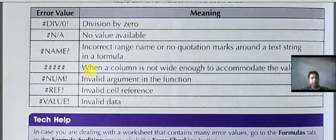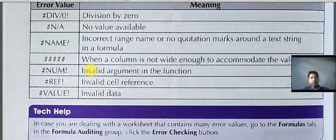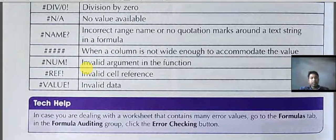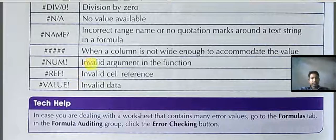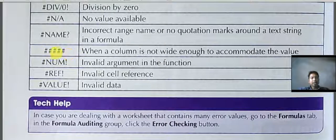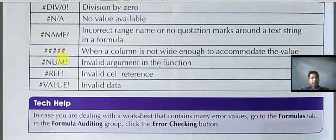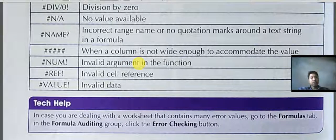Then ##### - when a column is not wide enough to accommodate the value. If the value can't be accommodated in the cell, then this hash symbol appears. Then #NUM! - invalid argument in the function that you are using.